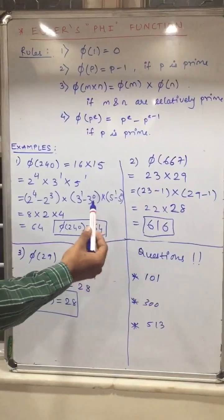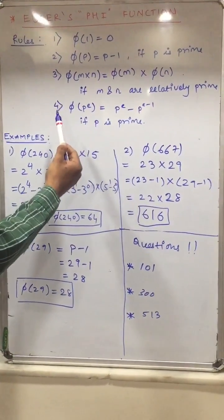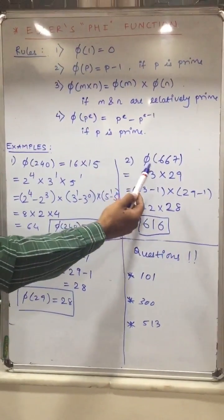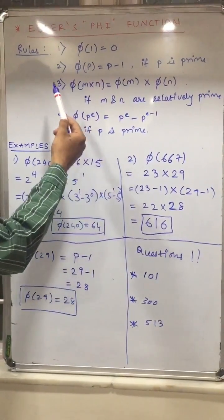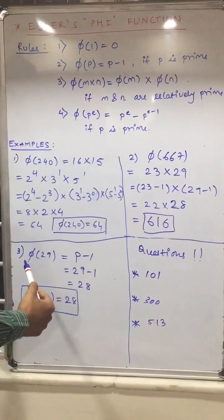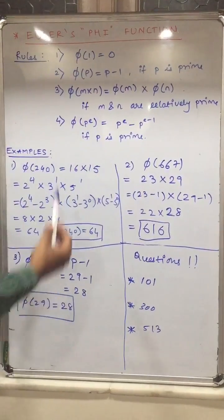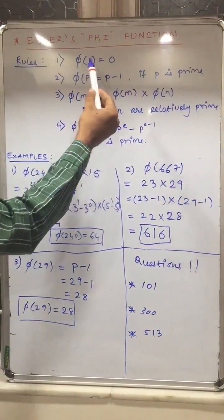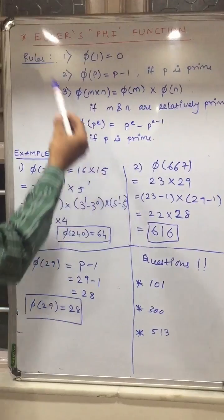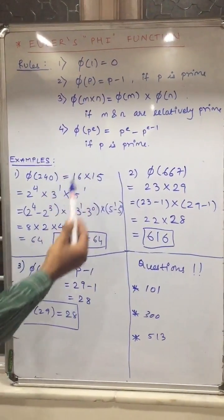Now you can see that example 1 follows rule number 4. Example 2 follows rule number 2. Example 3 follows rule number 3 as well as 2. And phi of 1 is always 0. So I hope all the concepts about Euler phi function are clear.